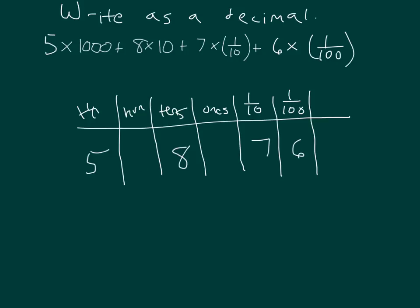In all those places without a digit, we'll put 0. And we'll make sure to place our decimal point in the right spot. So that is 5080 and 76 hundredths.